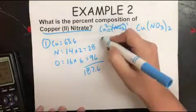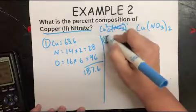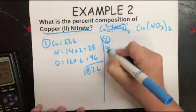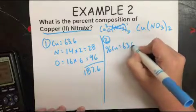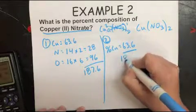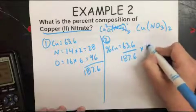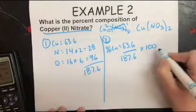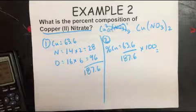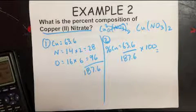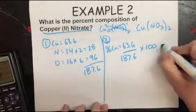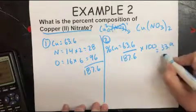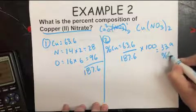So 63.6 plus 28 plus 96 equals 187.6. So then step two, find the percents. So to find the percent of copper, you're going to do 63.6 divided by 187.6 times 100, which should give you 33.9% copper.